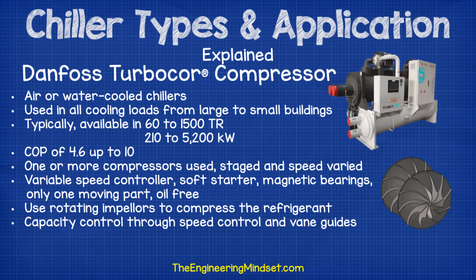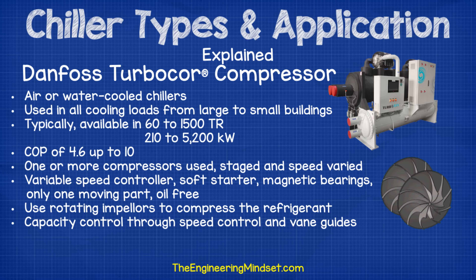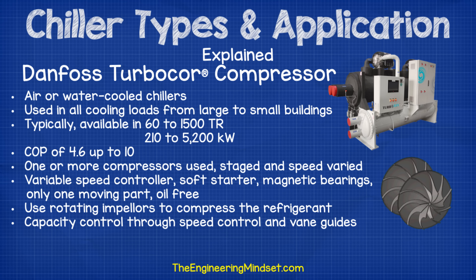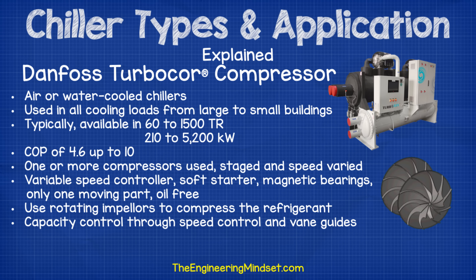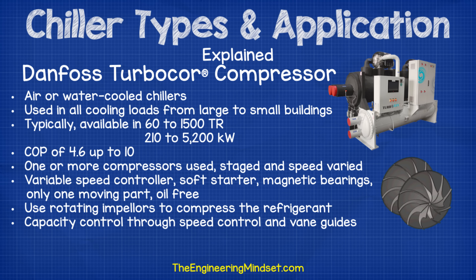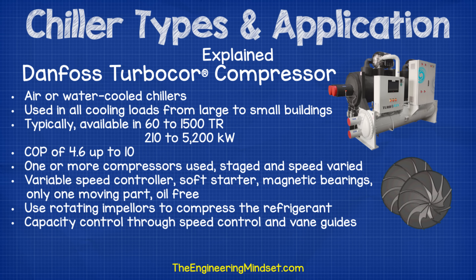Turbo-core compressors represent the latest in chiller compressor technology — an evolution on the centrifugal-type compressor, and they're becoming more common. Turbo-core compressors can be used for air or water-cooled chillers and are used in all cooling loads from large to small buildings, typically available in 60 to 1,500 tons or 210 to 5,200 kilowatts. They have a COP of 4.6 up to 10. They have one or more compressors that can be staged or speed-varied, variable speed controllers, soft starters, magnetic bearings, and only one moving part. They are oil-free and very low maintenance, using rotating impellers to compress the refrigerant, with capacity controlled through speed control and vane guides.